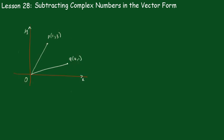Now subtracting complex numbers in the vector form: say OP minus OQ is equal to, as before, OP plus QO, which equals QO plus OP, which is QP.